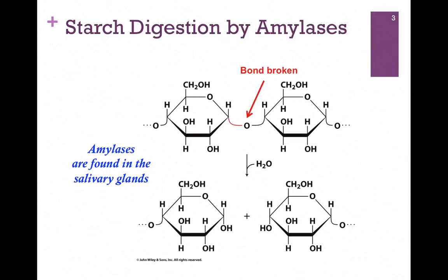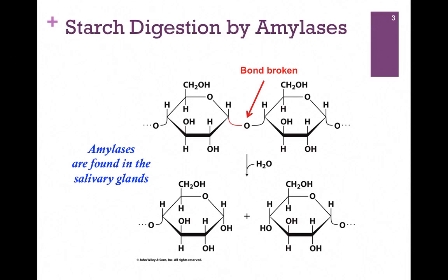Digestion actually begins in the mouth by the action of amylases. They help us digest starch — they're hydrolases that break the bonds connecting those glucose polymers, and we release the monomeric carbohydrates. They're found in salivary glands. You can test this yourself by simply biting off a piece of a saltine cracker and holding it in your mouth. Eventually, it will actually become sweet because these salivary amylases are at work breaking those bonds, and you're tasting the glucose that's released.